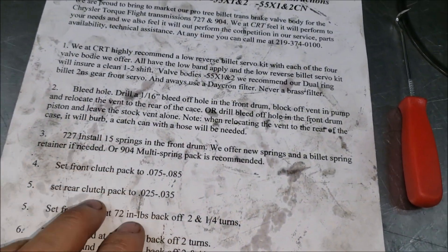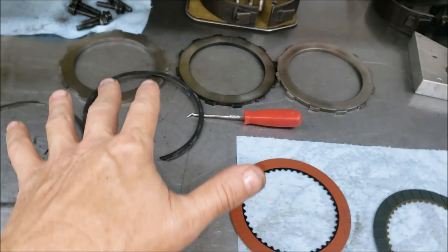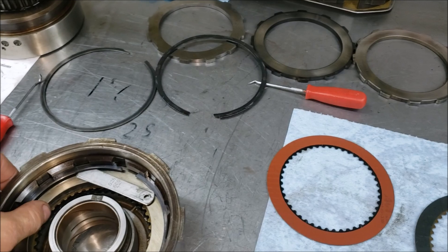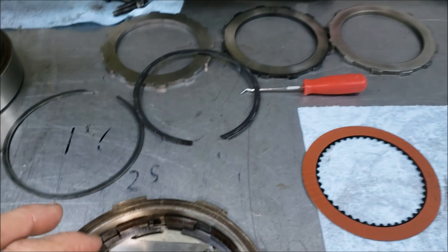First thing we're gonna start with is we're gonna go right down the list. He says set front clutch pack 75 to 85 thousandths. Whenever you do this you got to have yourself an assortment of spacers, different clips. This comes into play.